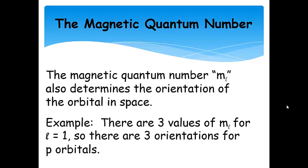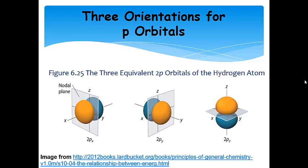The magnetic quantum number M sub L also determines the orientation of the orbital in space. For L equals 1, a P orbital, there are three values of M sub L, meaning three orientations. One P orbital is oriented along the X axis — that's 2PX — another along the Y axis — that's 2PY — and the last along the Z axis, 2PZ. So three orbitals in the P subshell, three different orientations, three values of M sub L.